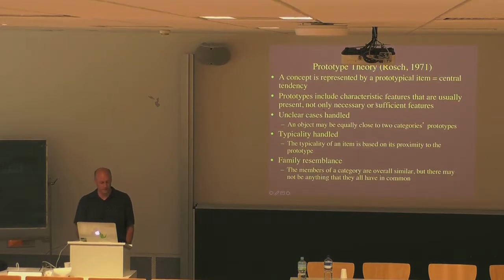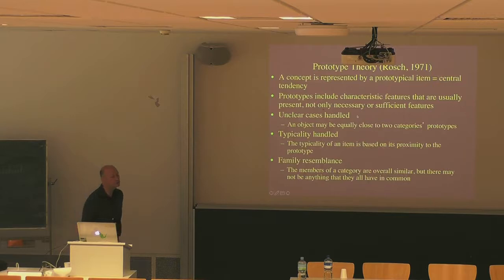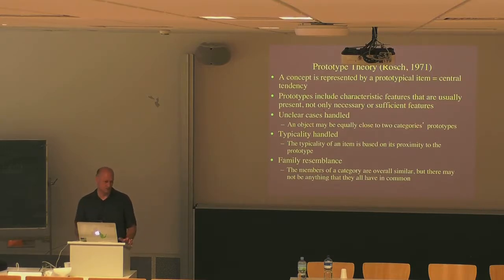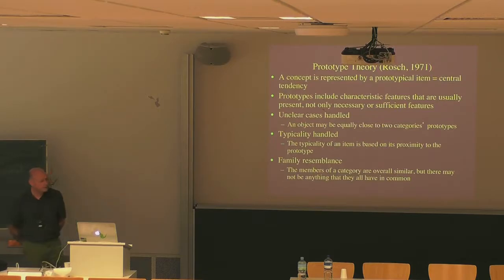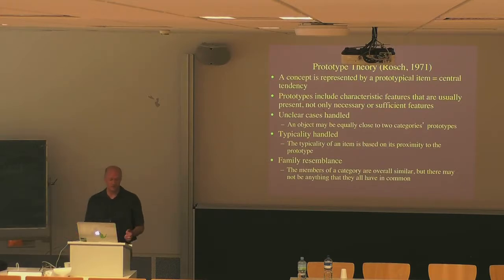This allows the system to naturally handle unclear cases. An object might be about equally close to two category prototypes — if you're a bat, you might be close to both the bird prototype and the mammal prototype, making you a genuinely unclear case to people who don't know the rule. Typicality is graded: the typicality of an item is based on its proximity to the prototype.